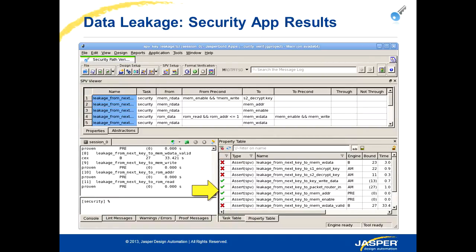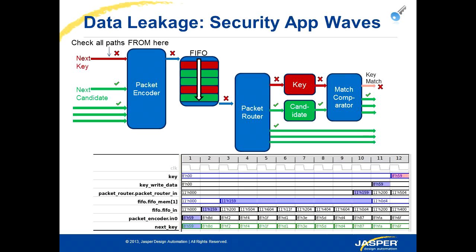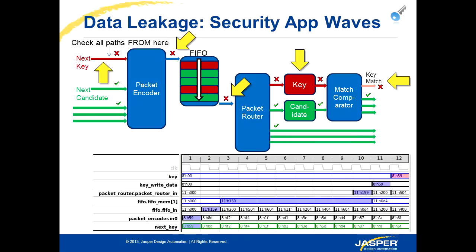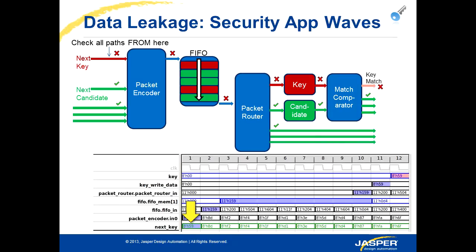These are the results we get. Whenever we get a check mark, it indicates that secure data never goes to that specific location. Whenever we get an X, that means secure data can go from the secure location to that destination. When we overlay these results on the design, we see that all of the green signals — green inputs and green outputs — can never see the secure data. The secure data can go from the source all the way to the FIFO, reach the key, and reach the key match output, which is expected. This shows we don't have any leakage issues. For any of the X results, we can ask the tool to show us how data gets there — here is one example waveform showing how data on the key input can eventually propagate to the key signal.